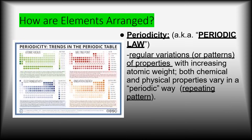Let's talk about how elements are arranged. A very important term is the word periodicity — you need to know this word. It's the same as periodic law. Boiled down, that means there are patterns on the periodic table — patterns of properties with increasing atomic number. Both chemical and physical properties vary in a periodic way. So periodicity and periodic law essentially mean patterns.